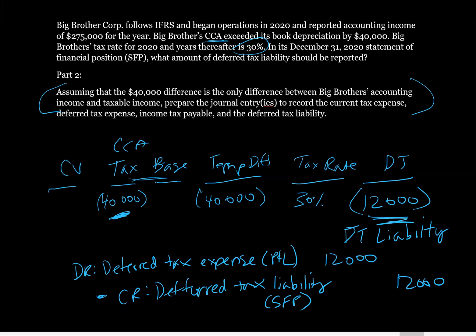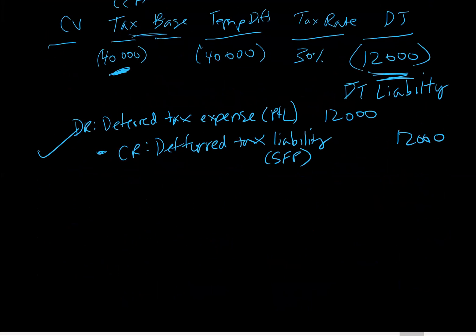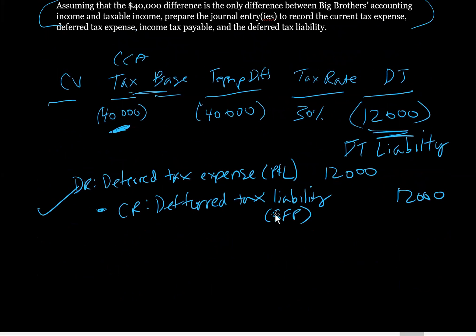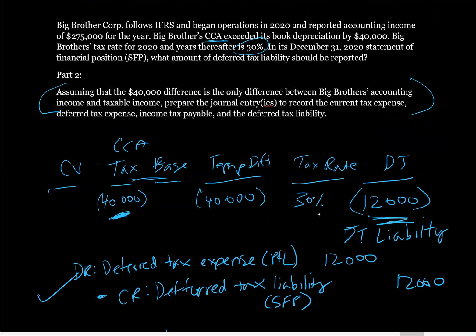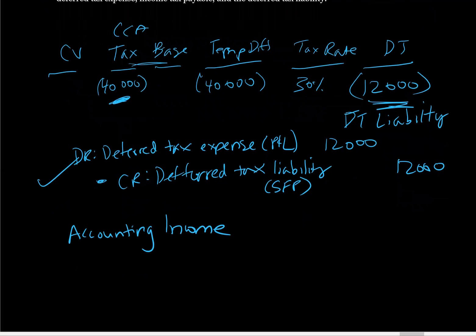It says, assume that the $40,000 difference is the only difference between Big Brother's accounting income and taxable income. Prepare the journal entries to record the current tax expense, deferred tax expense, income tax payable, and the deferred tax liability. Well, we actually just did the deferred tax one, but now let's do current income tax expense. Now, in order to calculate current income tax expense, we need a reconciliation between accounting income. And what were we told for accounting income? They reported income of $275,000 for the year.